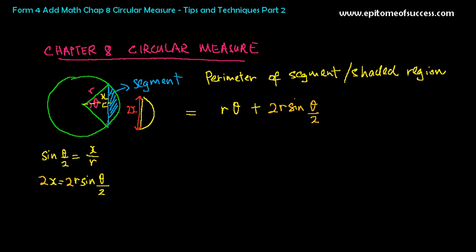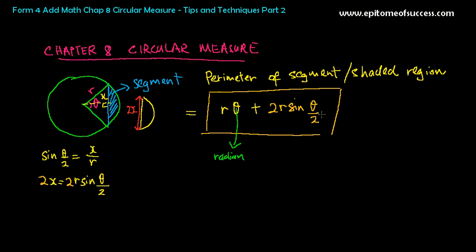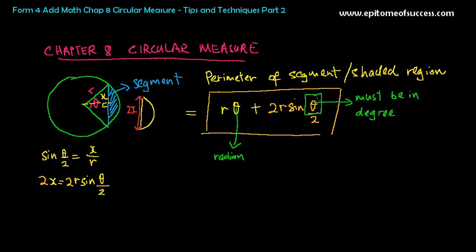And that straight line, added to the length of the arc, gives you the perimeter of the segment or shaded region. Something very important to take note of: this theta must be in radian. Unless your calculator is in radian mode — which by default it is not, the calculator is in degree mode — then the angle used with sine, cos, or tangent must be in degree. So if your calculator is in degree mode, you must enter the angle for the sine part in degrees. A lot of students make this mistake.